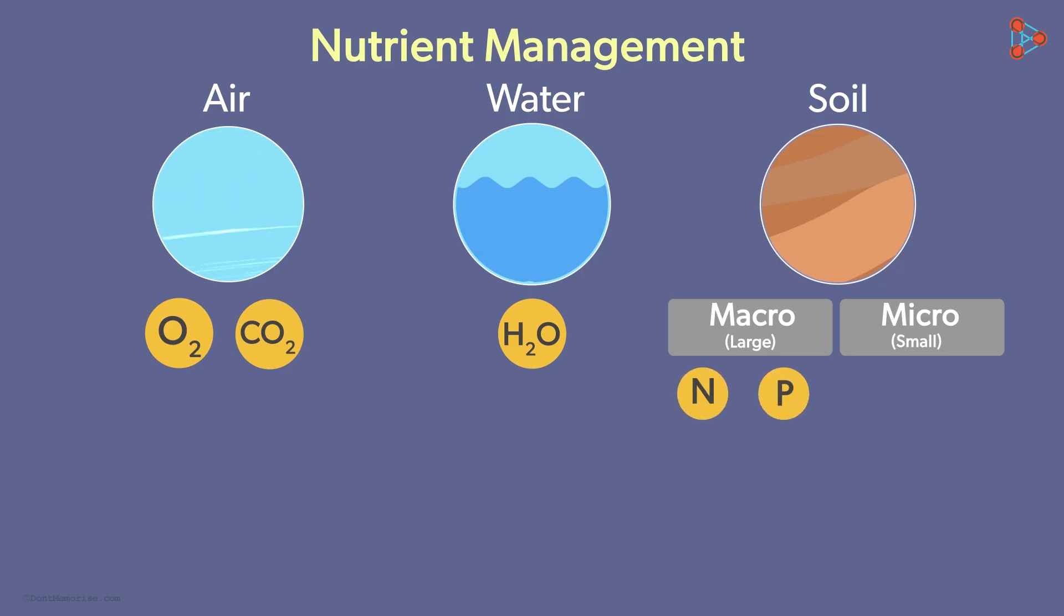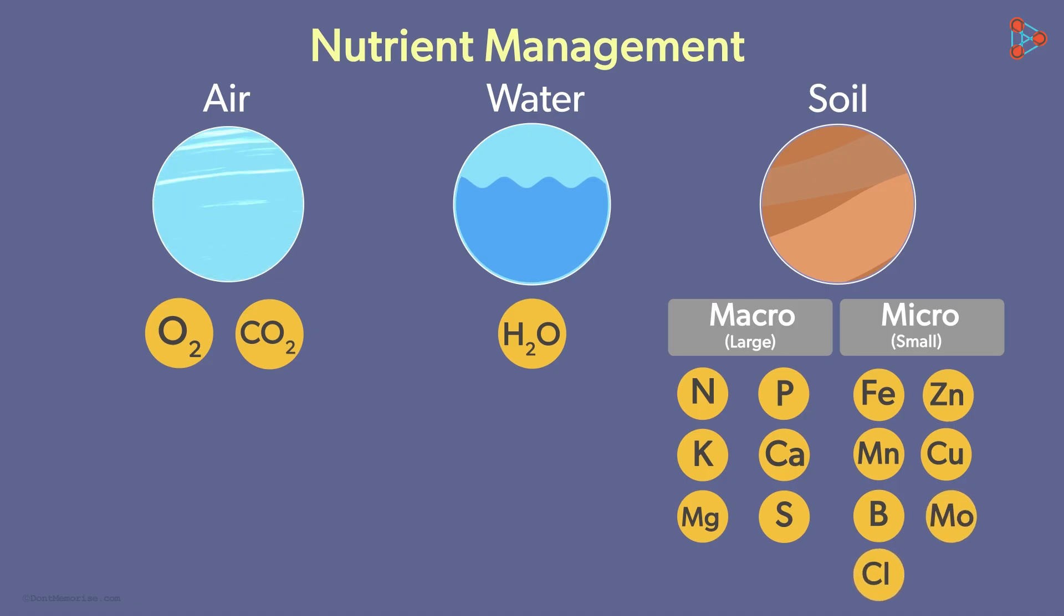Nitrogen, phosphorus, potassium, calcium, magnesium and sulfur are the macronutrients, while iron, manganese, boron, zinc, copper, molybdenum and chlorine are micronutrients.